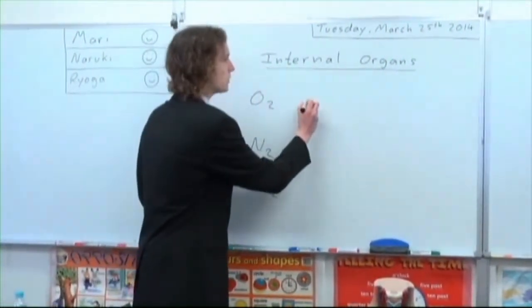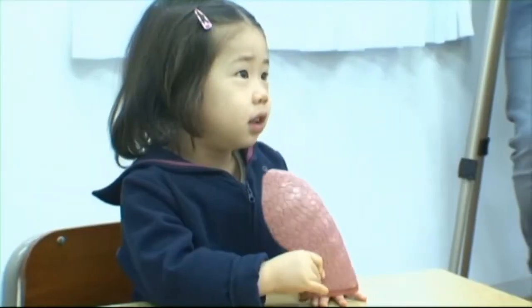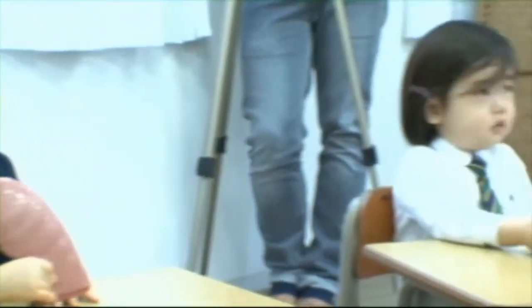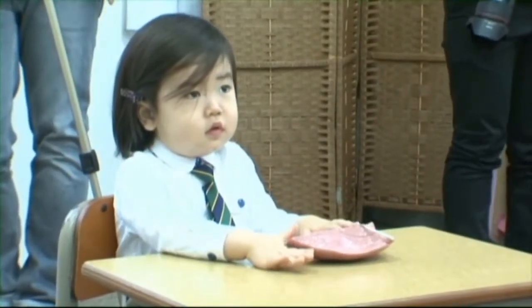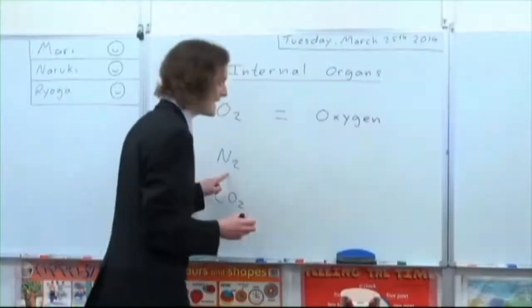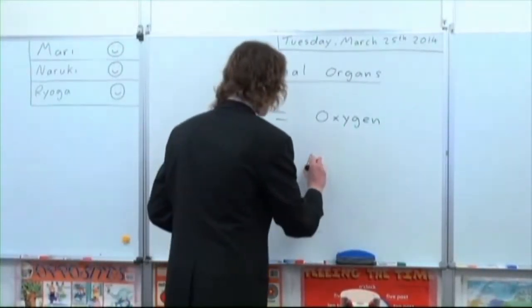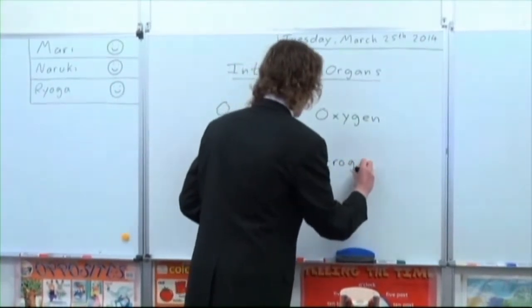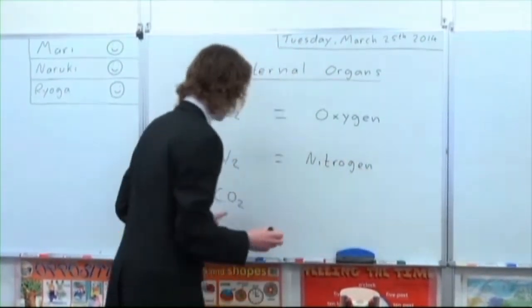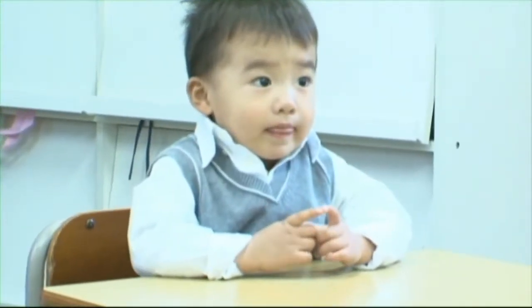Can anyone tell me what is O2? Oxygen. Good. O2 is oxygen. What is N2? N2 is nitrogen. Good. N2 is nitrogen. And CO2? Carbon dioxide. Very nice. CO2 is carbon dioxide.